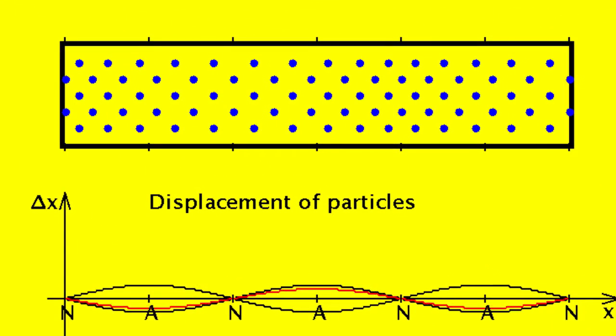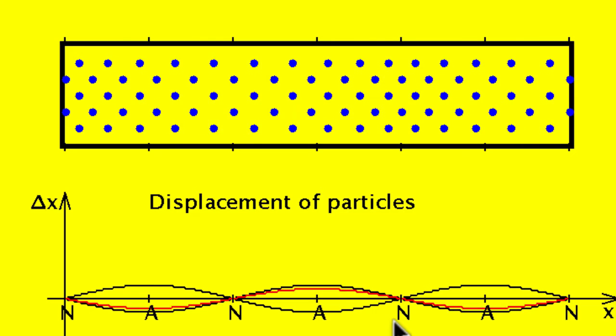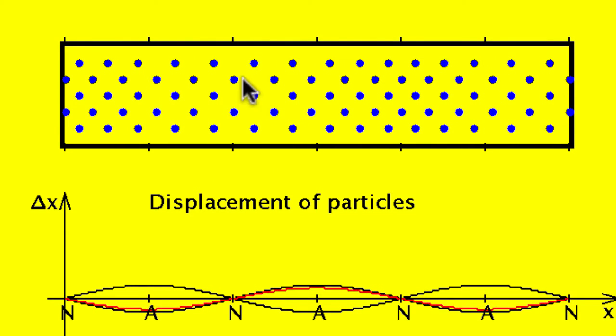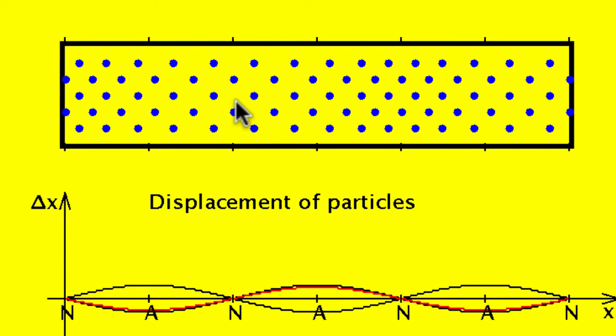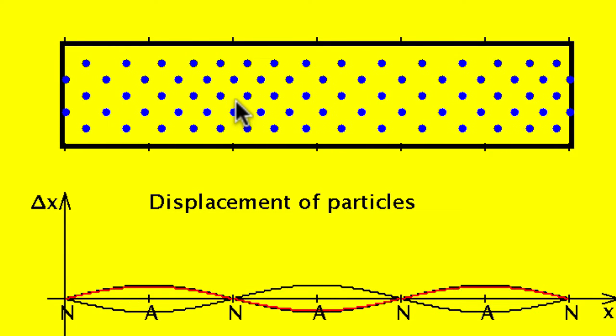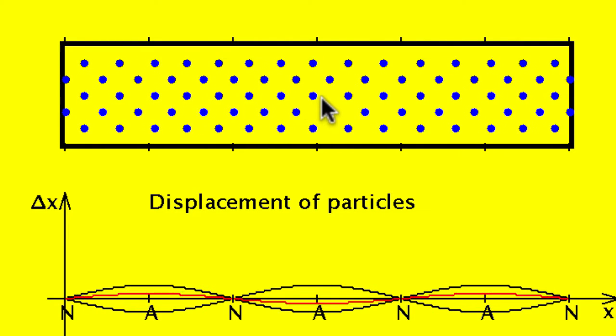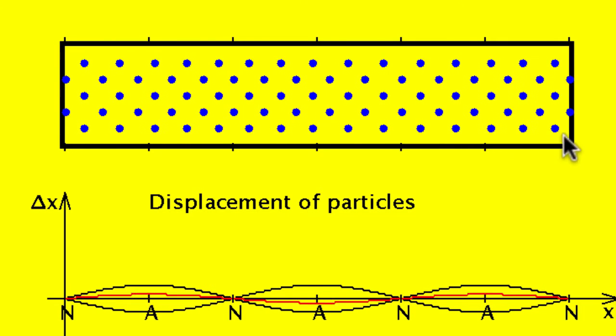You can also have standing longitudinal waves. If you look in this double closed-end tube, you can see that there are spots, such as right here, where the molecules are not moving at all. Those are called displacement nodes.